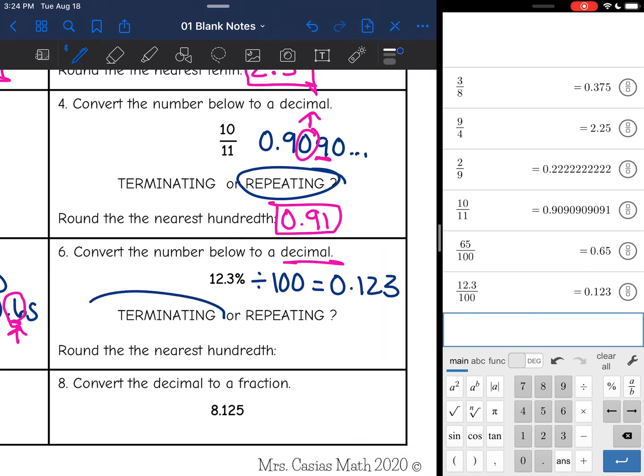Which that stops, so it's terminating, and now I need to round it to the nearest hundredth. 2 is in the hundredths place, and there's a 3 after, so the 2 will stay the same. So that number rounded to the nearest hundredths place is 0.12.